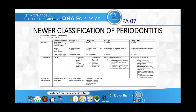Together, everything leads to periodontitis — that is, the breakdown of the periodontal ligament. The new classification is based on staging and grading, divided by severity, complexity, extent, and distribution. Periodontitis is divided into stage 1, 2, 3, and 4, depending upon the clinical attachment loss, radiographic bone loss, local factors like probing depth, and also the number of teeth involved.